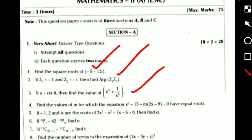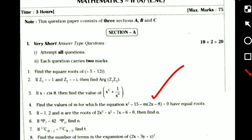The third question: if x equals cos θ, then find the value of x⁴⁶ plus 1 by x⁴⁶. This is from De Moivre's theorem. The fourth question, from quadratic expressions: find the value of M for which the equation x² − 15 − M(2x − 8) = 0 has equal roots. The fifth question, from theory of equations: if −1, 2, and α are the roots of 2x³ + x² − 7x − 6 = 0, then find the value of α.